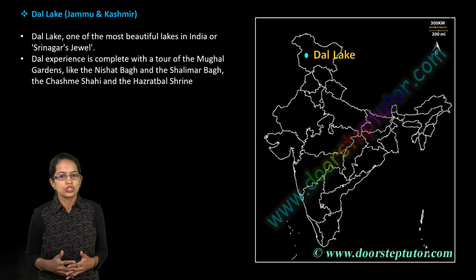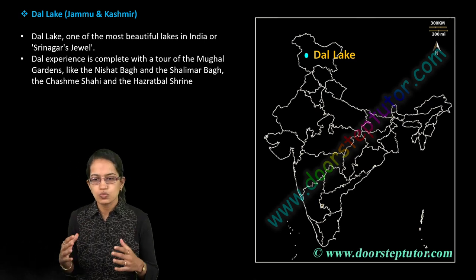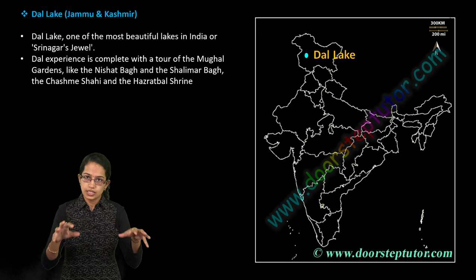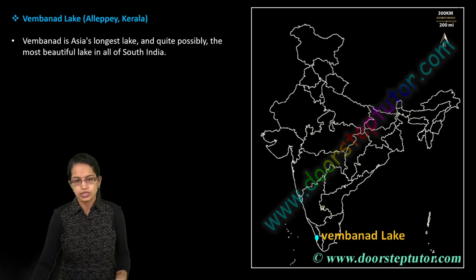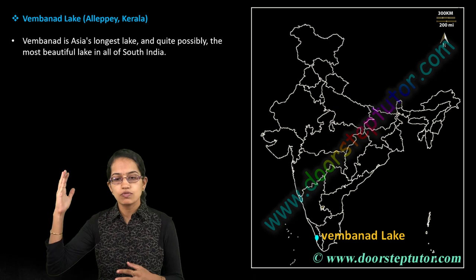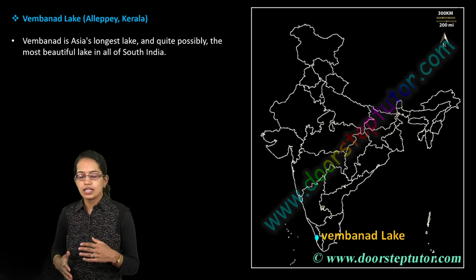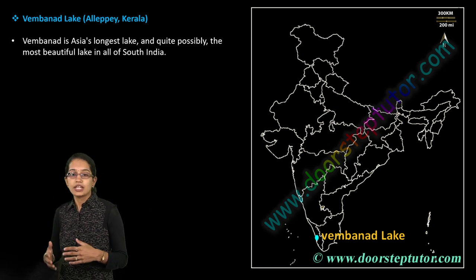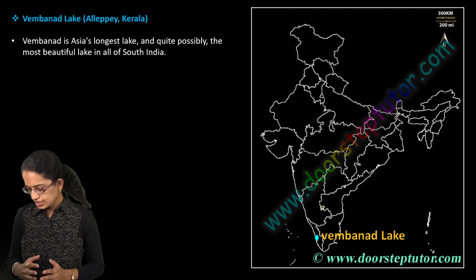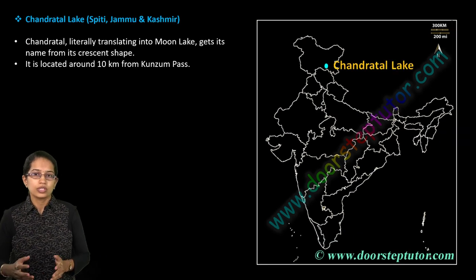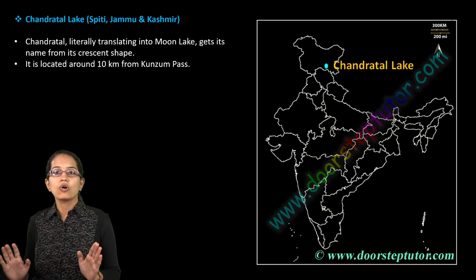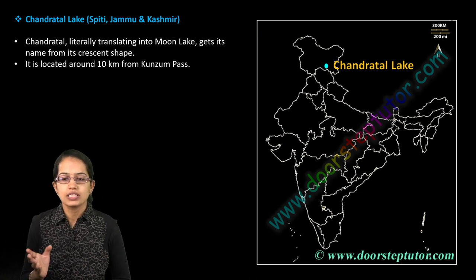Dal Lake is known as Srinagar's Jewel — a very important location for both the region and tourism. The next is Vembanad Lake in Alappuzha, Kerala. This is one of the longest lakes in Asia and a very important location in Kerala. It is also known for its backwaters. Chandratal is located in the Spiti region of Jammu and Kashmir.